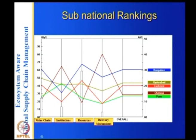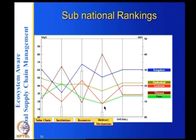Chennai has good institutions — the Tamil Nadu government is effective at attracting industries and managing land laws — but suffers in terms of research resources. Lucknow has a biotech R&D lab, but other cities lack that advantage. Lucknow also suffers in delivery services due to limited international airport facilities. The sub-national rankings illustrate each city's strengths and weaknesses across resources, institutions, and delivery mechanisms.